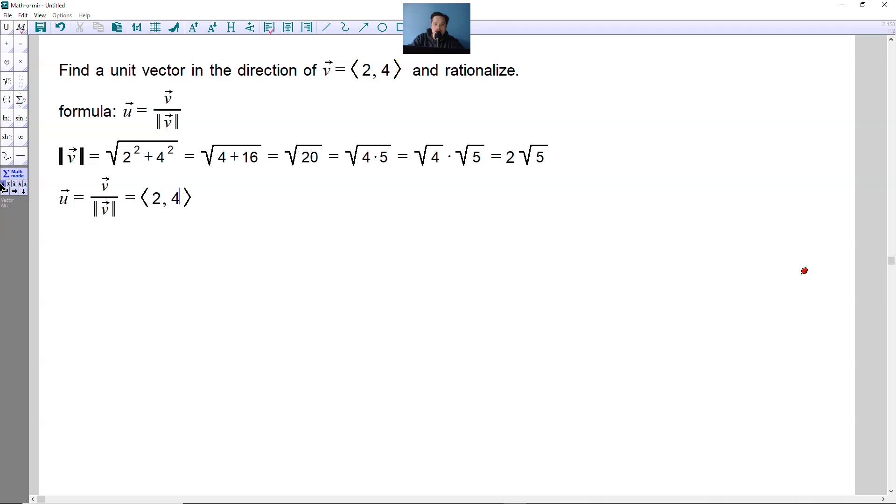You're going to have here 2, 4, and this has to be divided now by the 2 root 5, that value right here. Let's do that right now. So 2 and then 5. What you have to do now is rationalize this because there's a square root in the bottom. So let's just distribute this as follows at first. You're going to have in this position 2 over 2 and then square root of 5, comma, and then here it's going to be 4 over 2 square root of 5.